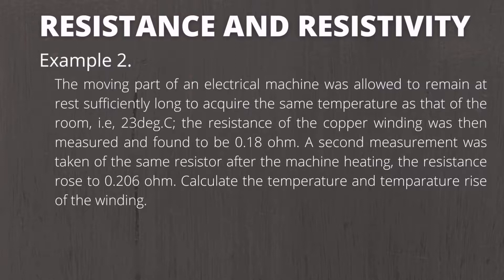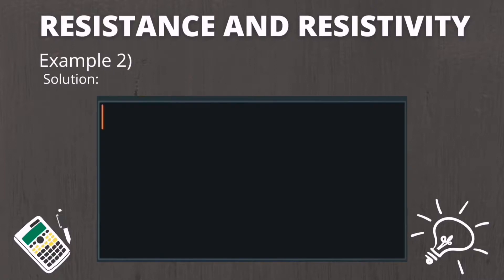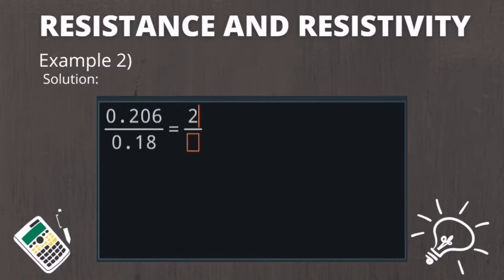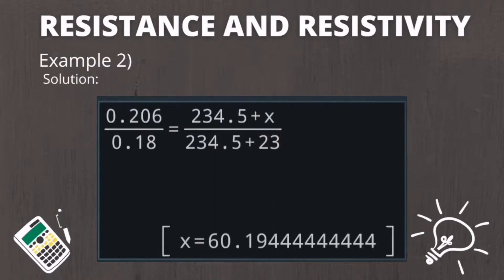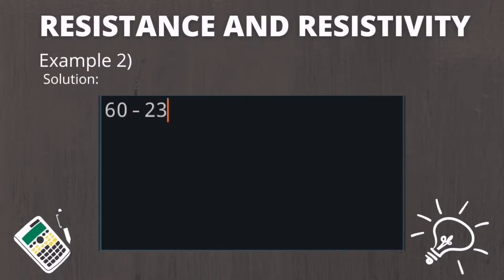Example number two: at room temperature of 20 degrees Celsius the resistance of an electrical machine copper winding is 0.18 ohm. After operation for a period of time, the resistance became 0.206 ohm. Calculate the temperature and temperature rise of the winding. Using the formula with R2 equals 0.206, R1 equals 0.18, and T1 equals 20 degrees Celsius, the result for T2 is 60 degrees Celsius. Therefore the rise in temperature is T2 minus T1 equals 60 minus 23 equals 37 degrees Celsius.